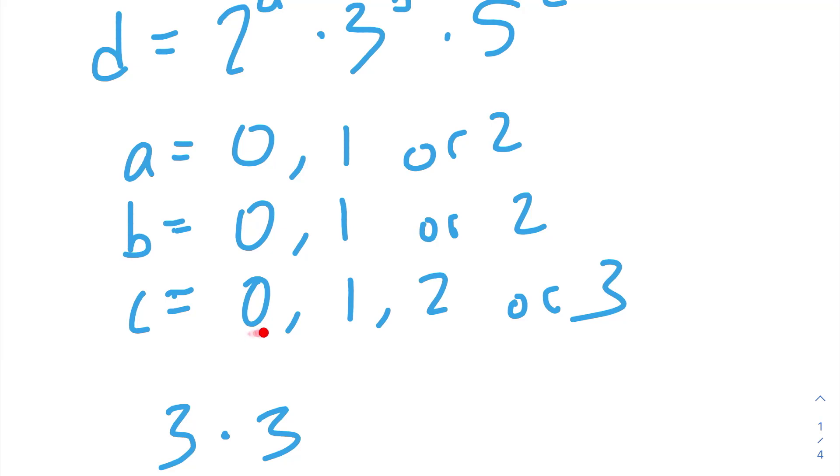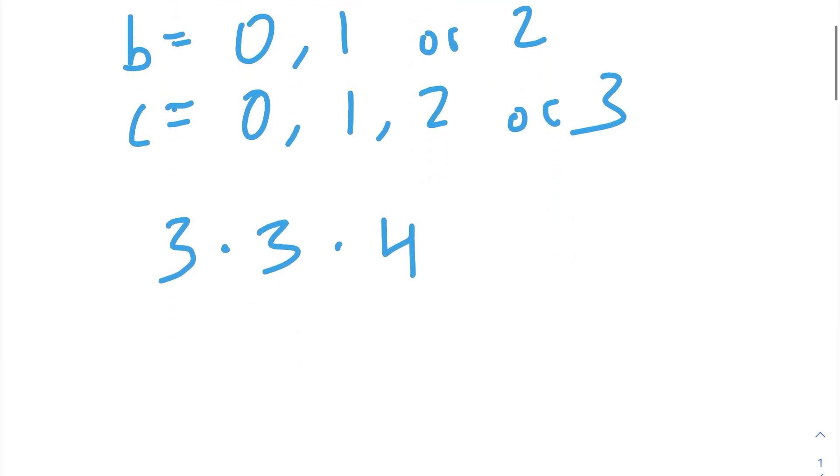And each different D can have 0, 1, 2, or 3 fives. So, we have 4 options for the number of 5s, and each divisor 4,500. If we multiply all this together, we will get 36. So, 4,500 has 36 divisors.